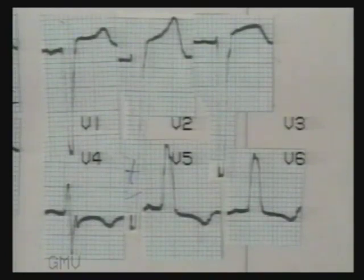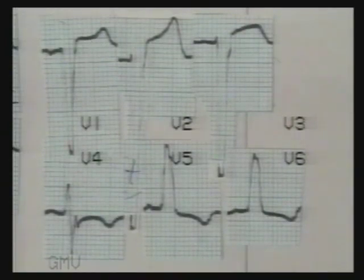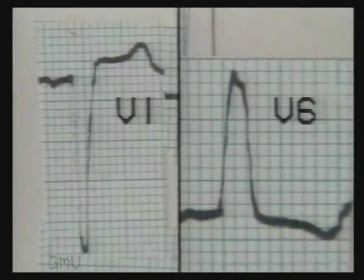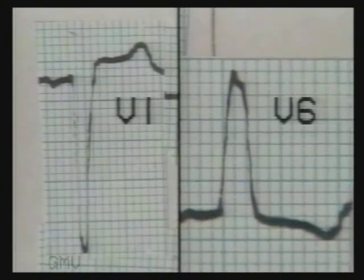This ECG shows wide QRS complexes. Lead V1 shows a broad and deep S-wave without an initial R-wave. Leads V5 and V6 show broad and slurred R-waves. So this is left bundle branch block. Note in close-up view the broad and deep S-wave in V1 and broad and slurred R-wave in V6, with the absence of a Q-wave in V6.